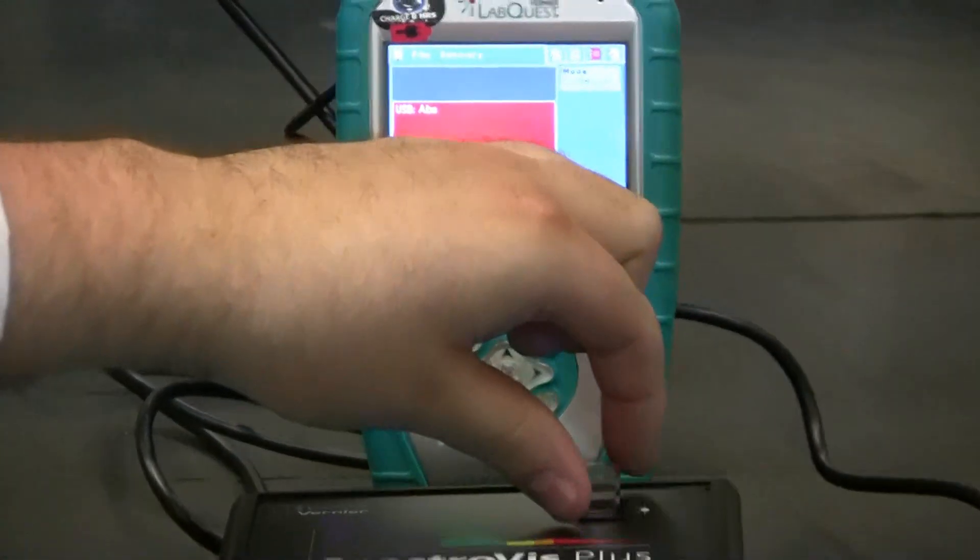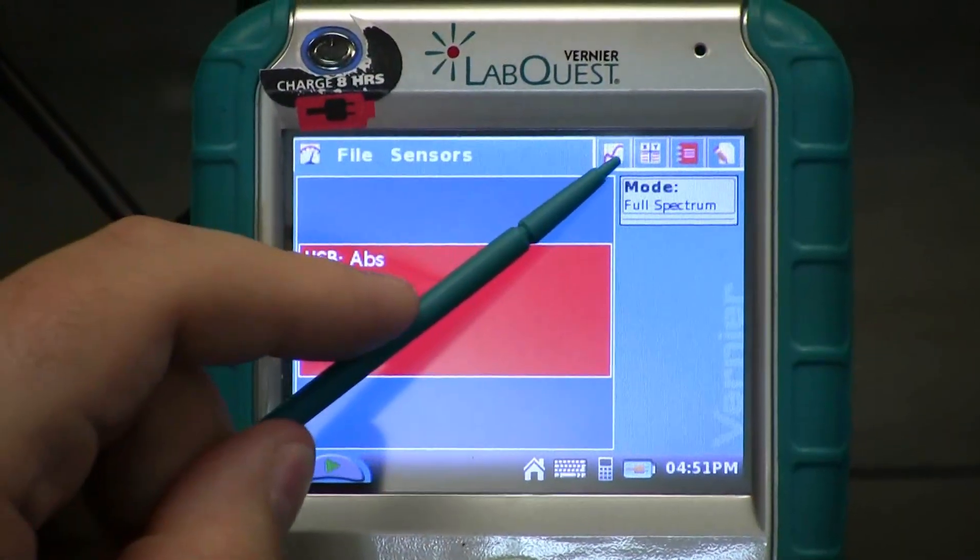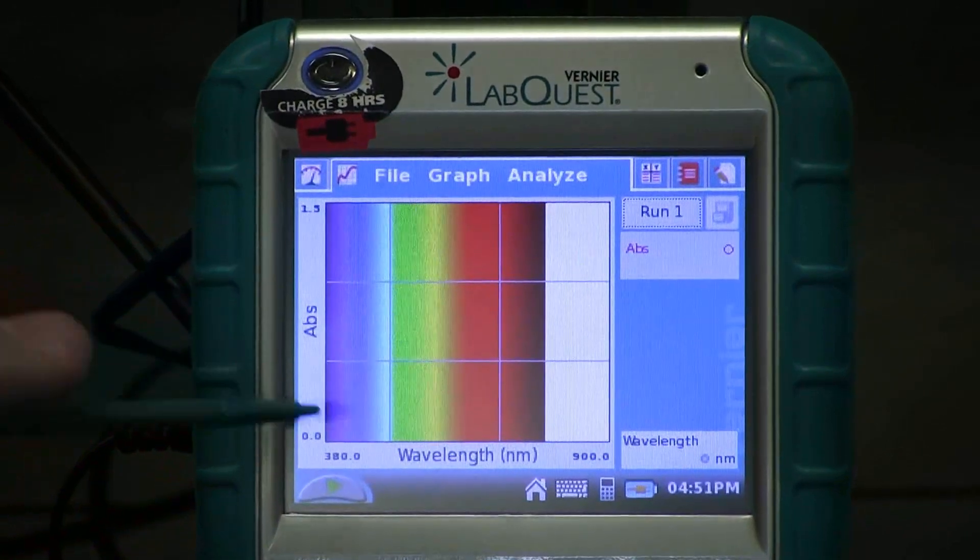Place your diluted stock solution into the cuvette slot. Now, click on the Graph tab and click Play.